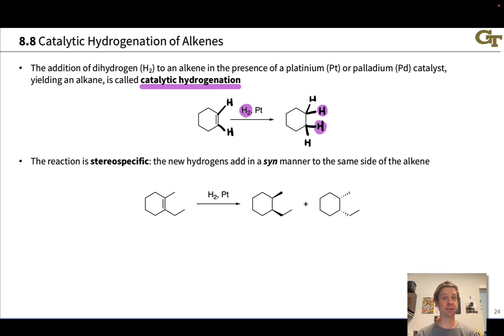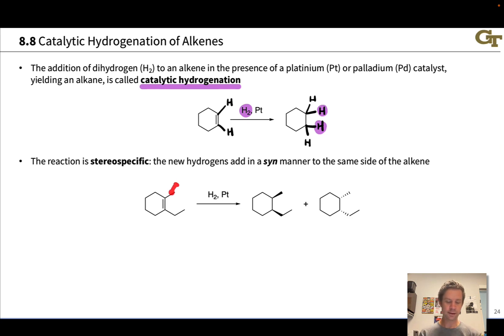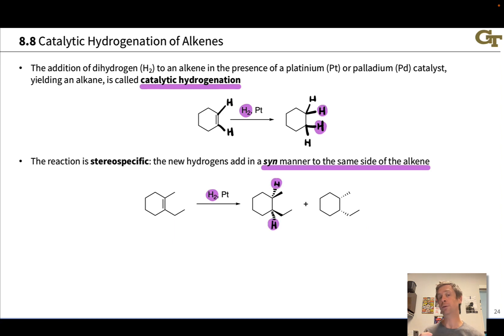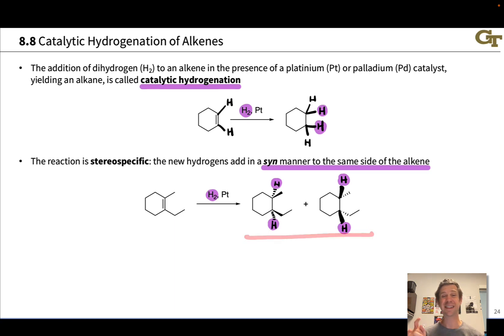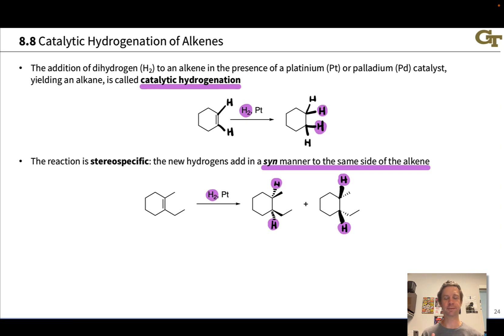This reaction is stereospecifically syn — the two new hydrogens both add to the same side of the alkene, and the mechanistic reasons for this will become clear on the next slide. With substituents on the alkene carbons, we end up with two different stereoisomers, but in both stereoisomeric products the two new hydrogens are on the same side of the original alkene: in the first, both hydrogens added from below; in the second, both added from above. So both of these are syn products. None of the anti-diastereomers are observed.